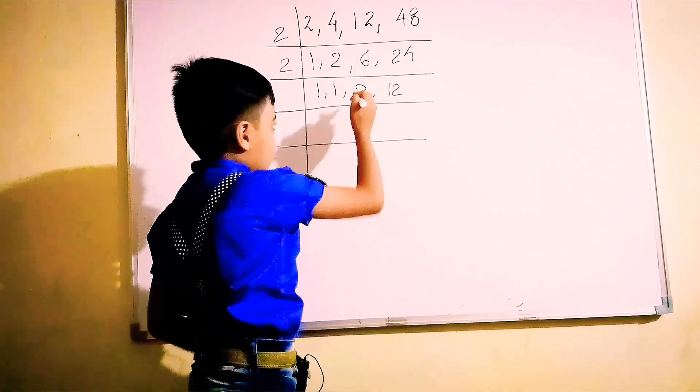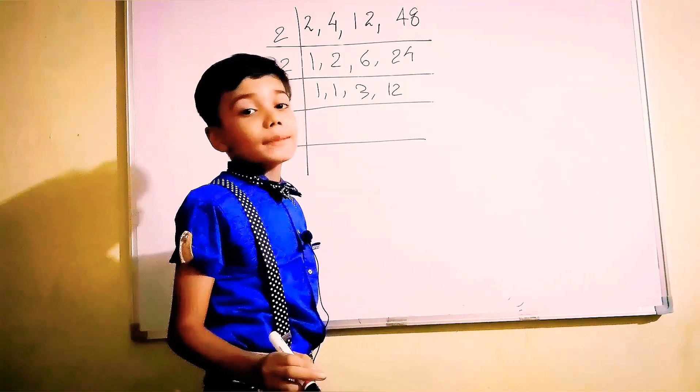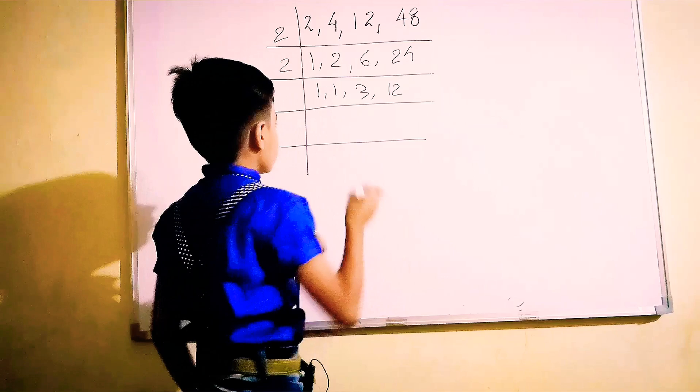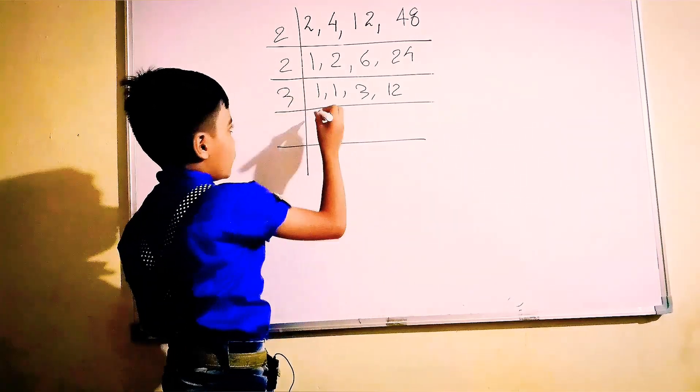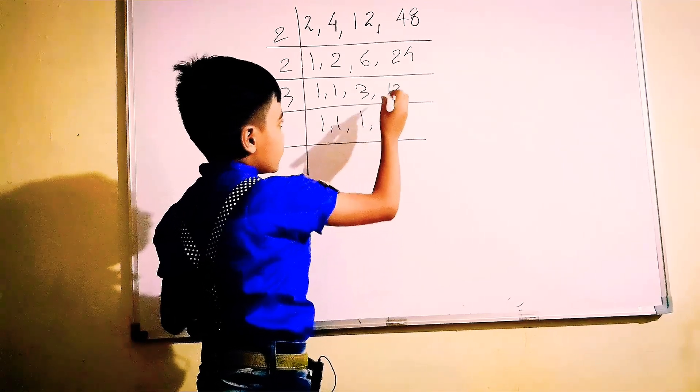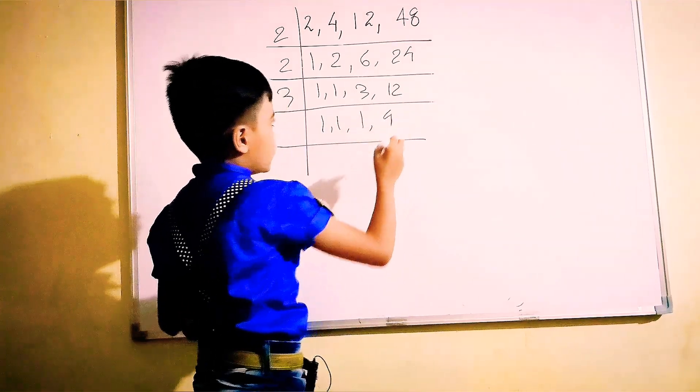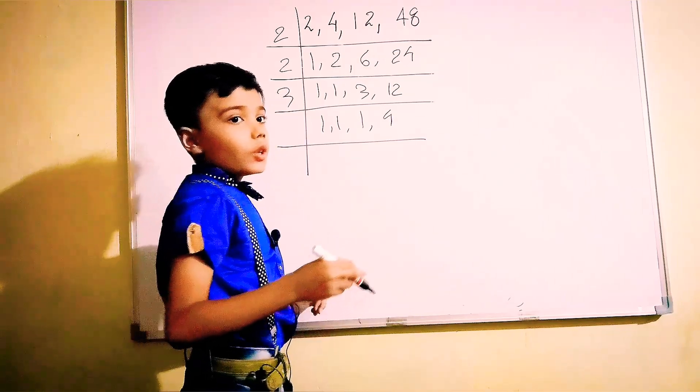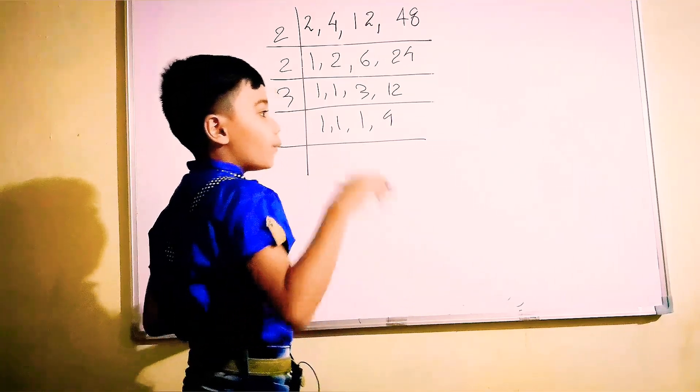Now here is 3. It's not divisible by 2, so we will divide from 3. 1 and 1 will be as it is. 3 ones are 3 and 3 fours are 12. All numbers became 1, so 4 will be divided from 4.